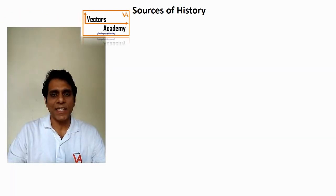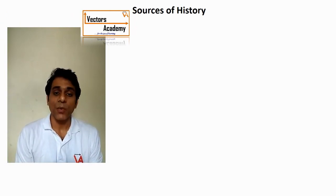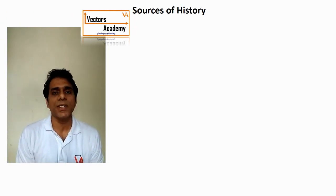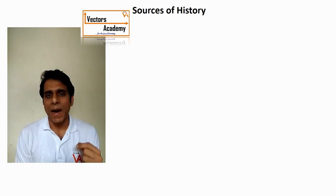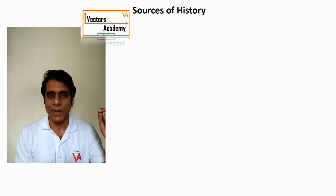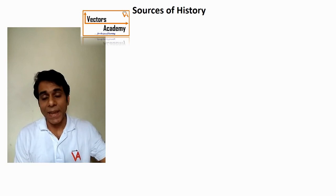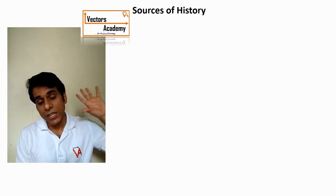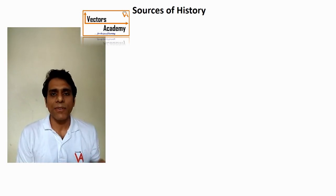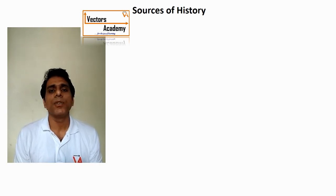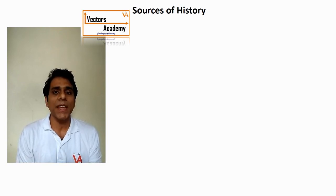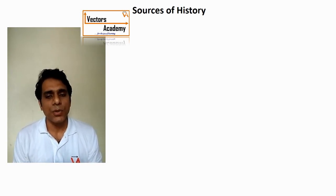Hello everyone, welcome to the next lecture on the first chapter of history, that is sources of history. We saw that history is something which has happened in the past. The past may not be very far away — even 10 years back, 5 years back, 1 year back, something has happened — that becomes history. To learn, know, and understand history, we refer to sources, which we know about history, and they are called sources of history.